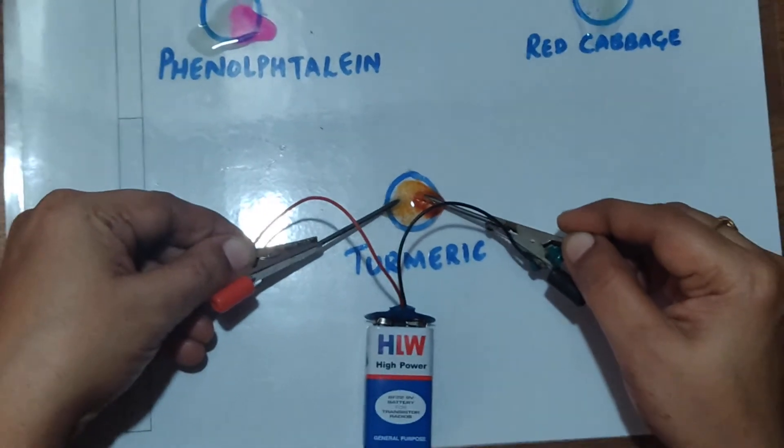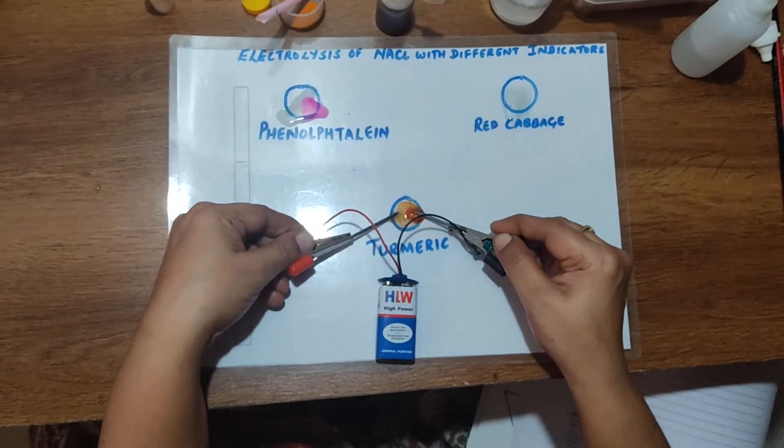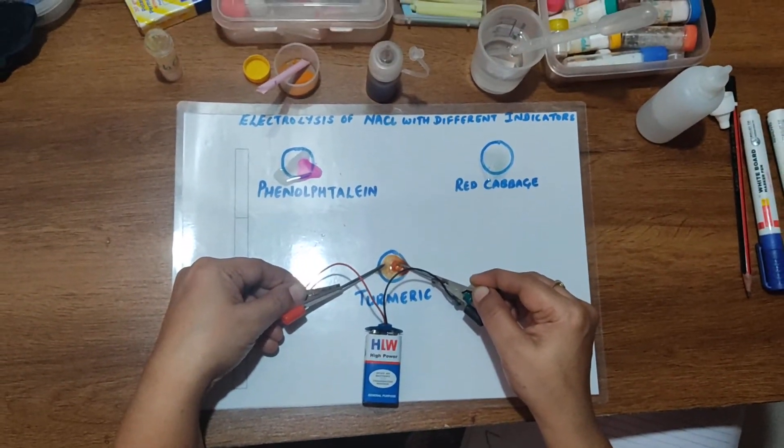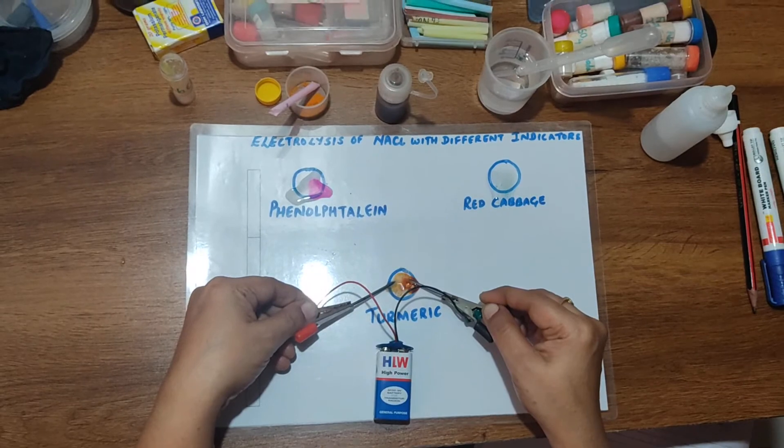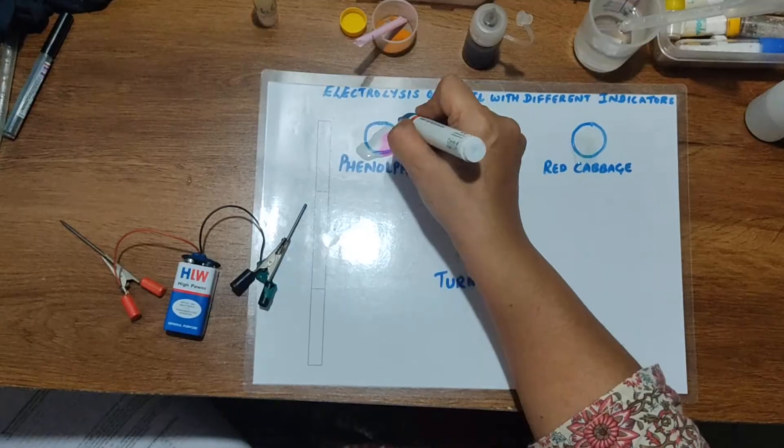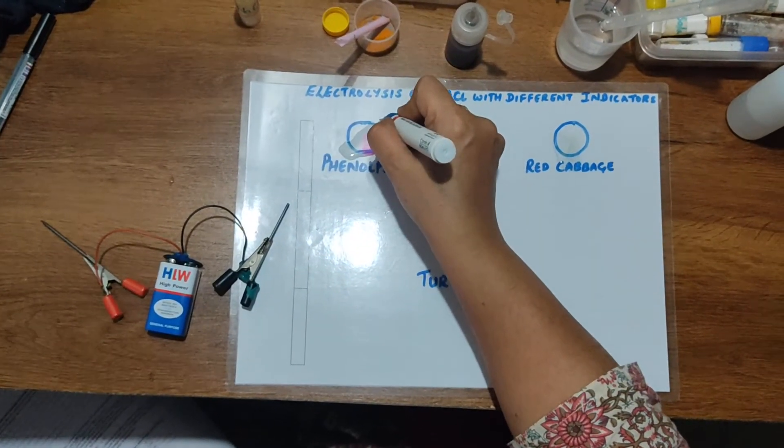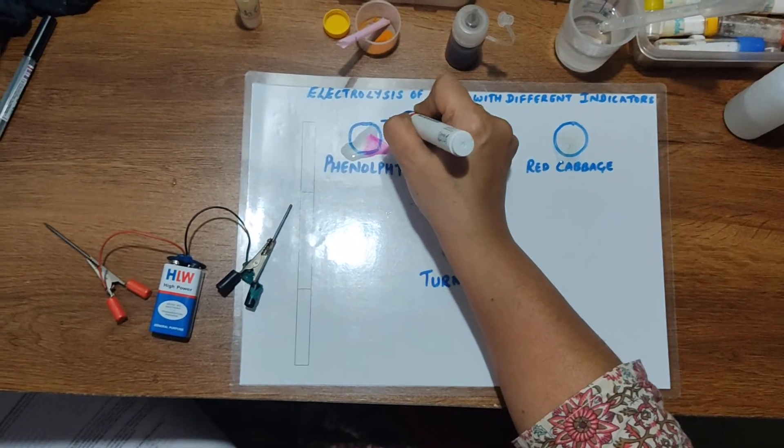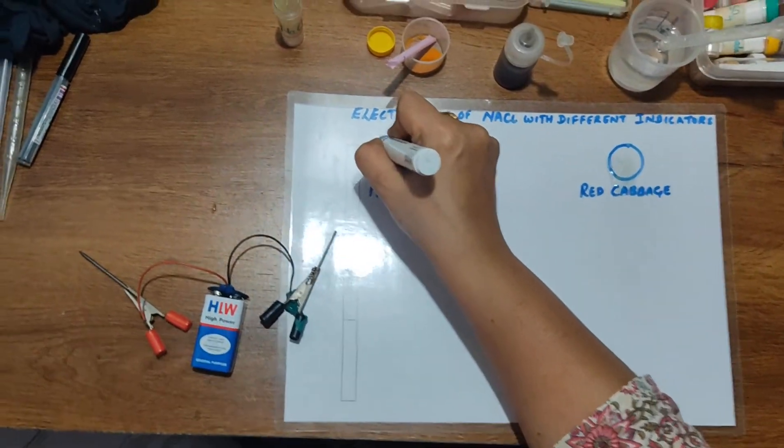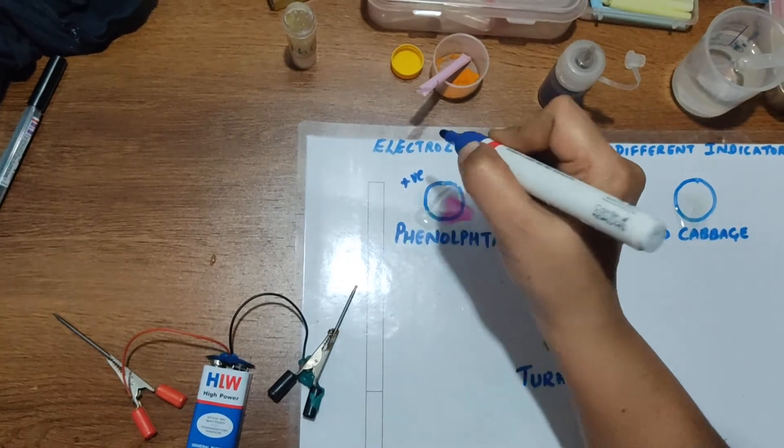So this is a very simple experiment to show electrolysis of sodium chloride. This is a simple redox reaction. This is the negative electrode and this is the positive electrode.